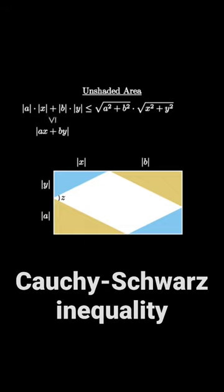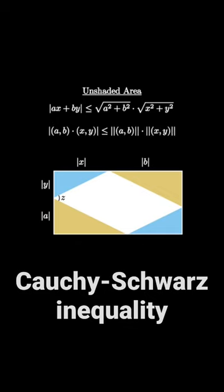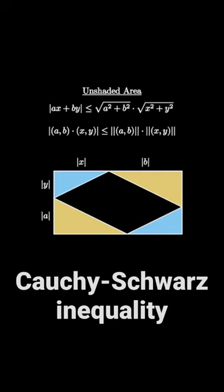But by the triangle inequality, this means that the absolute value of ax plus by is less than or equal to the product of the side lengths, so that the absolute value of the dot product of two vectors is less than or equal to the product of their magnitudes. This is the 2D Cauchy-Schwarz inequality.